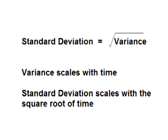One important difference to look at is the way variance and standard deviation scale — in other words, the way that variance and standard deviation increase over time. Variance scales with time; if you double the time, the variance will be twice as big. Standard deviation is the square root of variance, so standard deviation scales at the square root of time. For a four-year period, the annualized variance will be four times as large as for a one-year period, but the annualized standard deviation will only be twice as large.